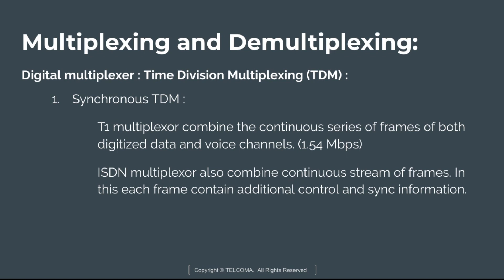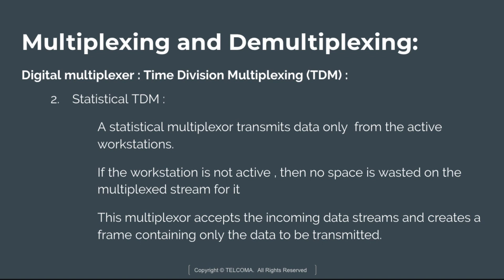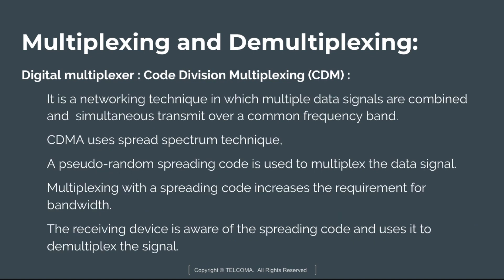An ISDN multiplexer also combines a continuous stream of frames, where each frame contains additional control and synchronization information. Asynchronous TDM — also called Statistical TDM — transmits data only from active workstations. If a workstation is not active, no space is wasted on the multiplex stream. The multiplexer scans incoming data streams and creates frames containing only data to be transmitted. It is used for low-bandwidth lines and provides much more efficient use of bandwidth.